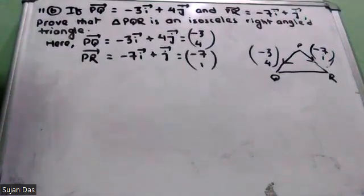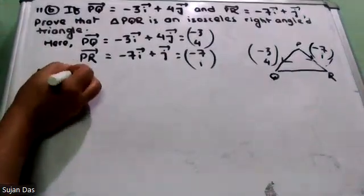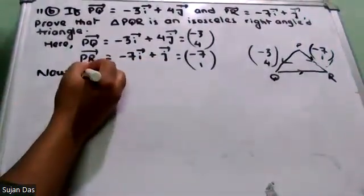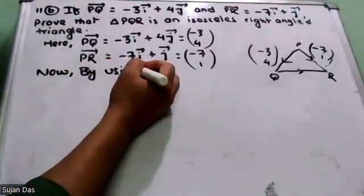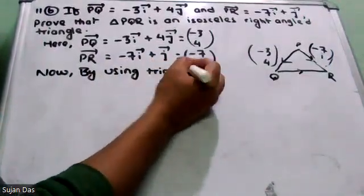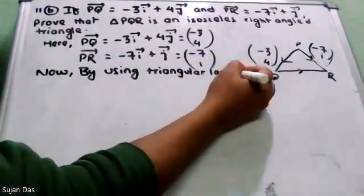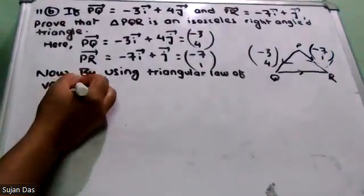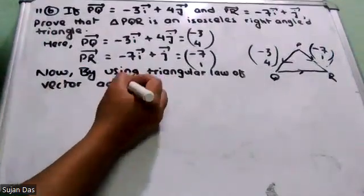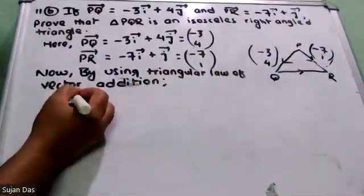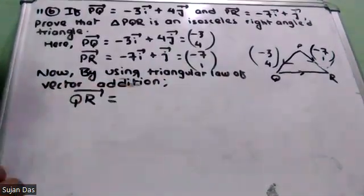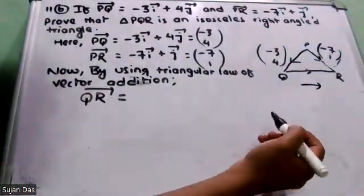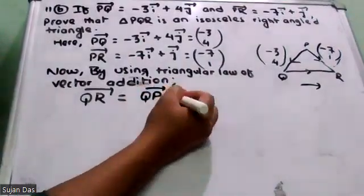The angle P is not 90 degrees, so QR can't be one directly. Now, by using the triangular law of vector addition, we find QR. QR vector using the triangle law.